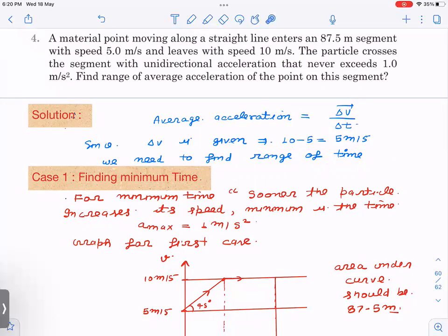First, we are finding the minimum time, then we will reverse the logic and find out the maximum time. For minimum time, I have taken from the hint given in the back of the book: the sooner the particle increases its speed, the minimum time is taken. Since maximum acceleration has a limited value of only 1 meter per second squared, for the remaining time the particle can move with the higher speed, thus minimizing time.